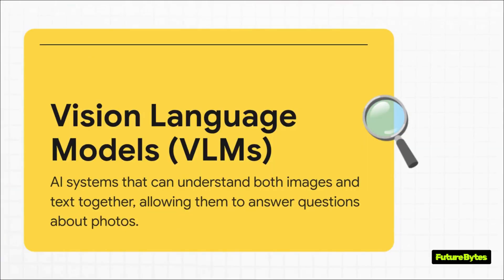The technology at the heart of all this is called a vision language model, or VLM for short. The easiest way to think about these is that we're giving AI its own set of eyes — and not just eyes that see, but eyes that can actually comprehend what they're looking at, just like they understand words. So instead of just typing a question, you could show it a chart, a document, a photo, and then just ask questions about it.